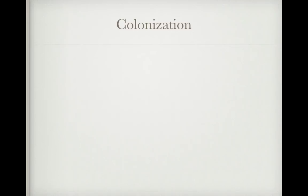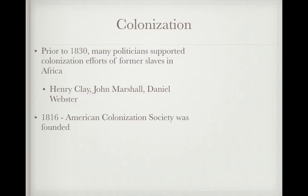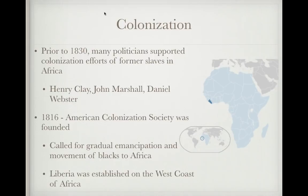Colonization was a big goal early on in the abolitionist movement. Prior to 1830, many politicians supported colonization efforts of former slaves in Africa — including Henry Clay, Chief Justice John Marshall, and Daniel Webster. In 1816, the American Colonization Society was founded, calling for gradual emancipation and movement of former slaves to Africa and Liberia. Liberia, on the west coast of Africa, was established for this purpose; its capital is Monrovia, named after President James Monroe.